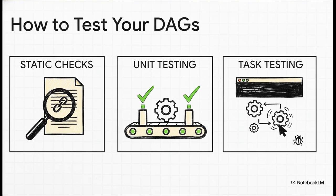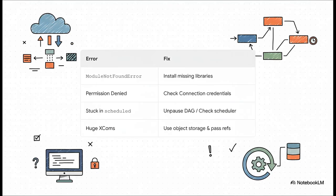You have got to test your DAGs — don't just write them and hope for the best. You can start with simple static checks to catch basic syntax errors, then run unit tests in your CI/CD pipeline to check the DAG's structure. And for debugging, you can run a single task all by itself right from your command line. You might want to screenshot this slide because it's your troubleshooting cheat sheet. Module not found means you forgot to install a Python library. Permission denied means go check your connection settings. Tasks stuck in scheduled means your scheduler is probably down. And if everything is running super slow because of giant XCOMs, you already know the fix.